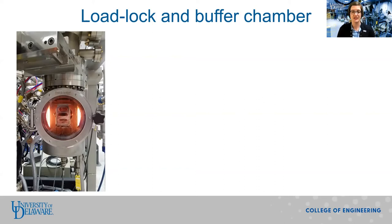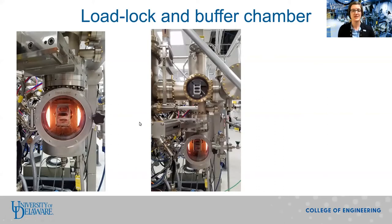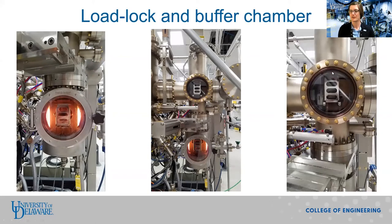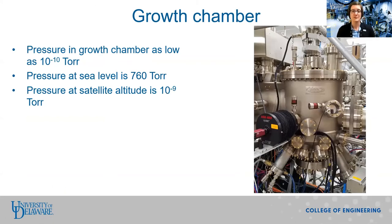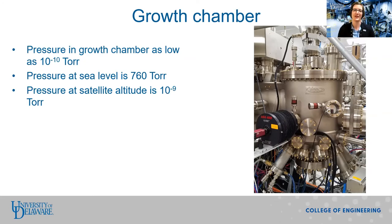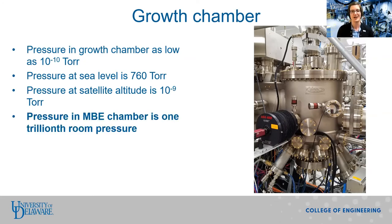After the substrate is sufficiently clean, we open the valve and move the substrate from the load lock into the buffer chamber. The buffer chamber stays under vacuum all the time, so it's extremely clean. After the buffer chamber, one substrate at a time is moved into the growth chamber, which is also under vacuum. The pressure in the growth chamber is routinely as low as 10 to the minus 10 torr. For comparison, pressure here in Delaware at sea level is around 760 torr, and pressure at satellite altitude is only 10 to the minus 9 torr. So the pressure in our MBE is actually one-tenth the air pressure at satellite altitude, or one trillionth of room pressure.